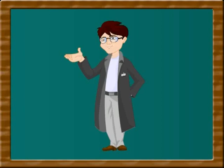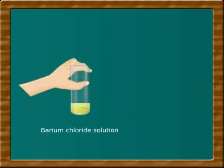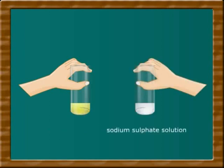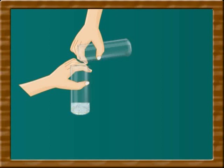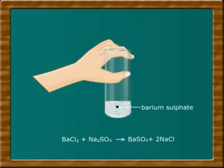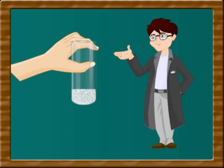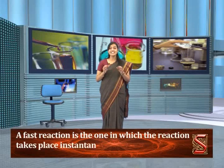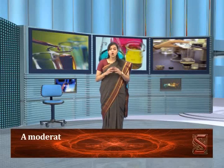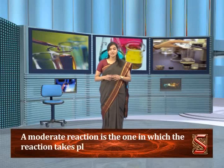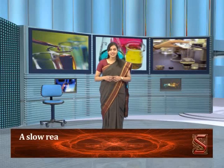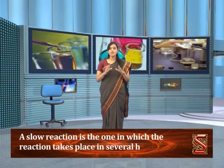We will now perform the following activity. Take barium chloride solution in one test tube and sodium sulfate solution in another. Add the two solutions together — you will notice a white precipitate of barium sulfate is formed instantly. This is a fast reaction. A fast reaction is one in which the reaction takes place instantaneously or within a few seconds. A moderate reaction is one in which the reaction takes place in a few minutes to a few hours. A slow reaction is one in which the reaction takes place in several hours and above.